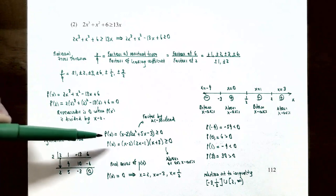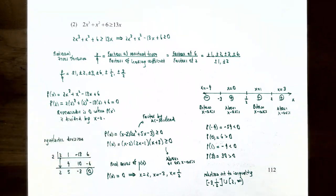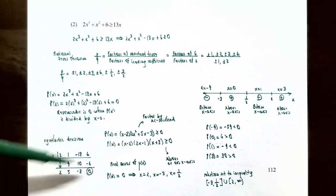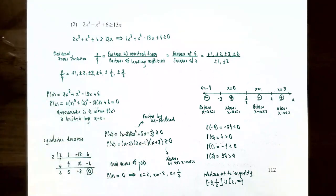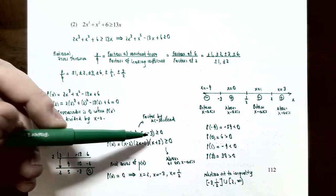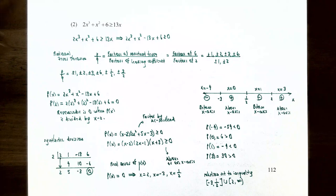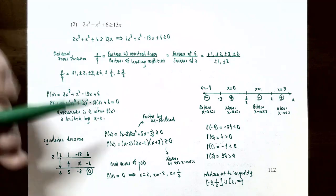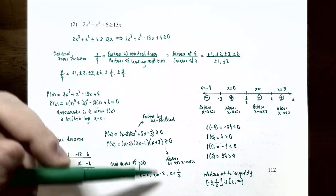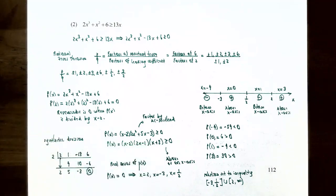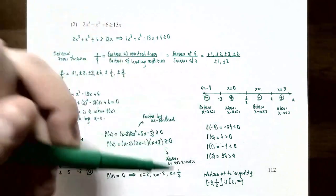So p(x) = (x−2)(2x² + 5x − 3). The quotient 2x² + 5x − 3 factors further using the AC method into (2x−1)(x+3). Therefore p(x) = (x−2)(2x−1)(x+3), and the real zeros are x=2, x=½, and x=−3. These go on the sign chart.